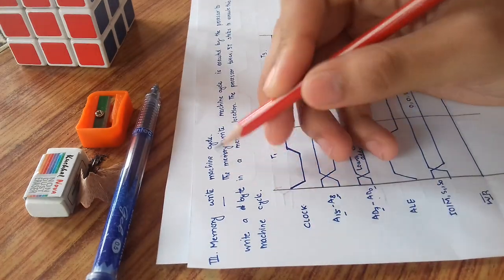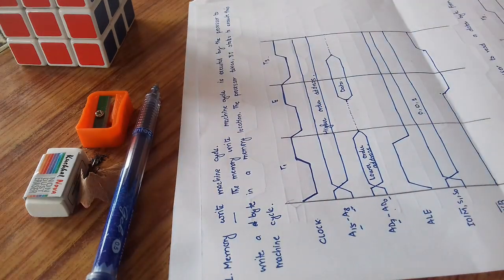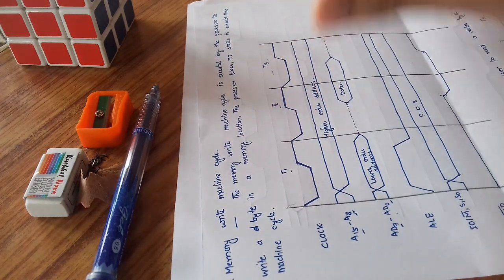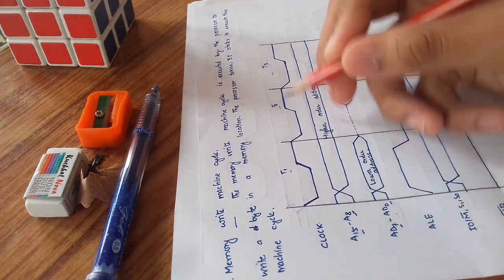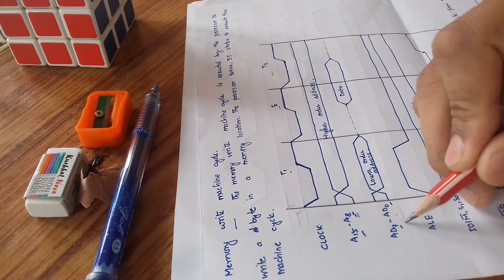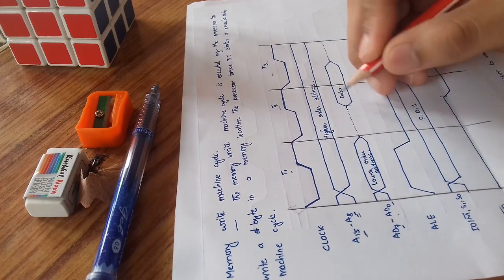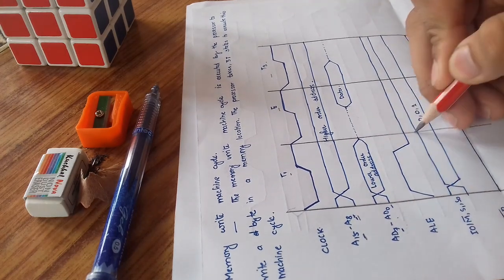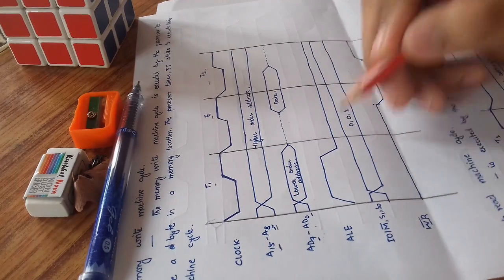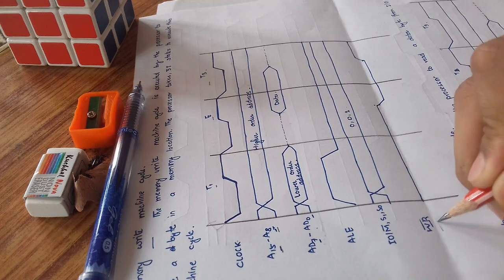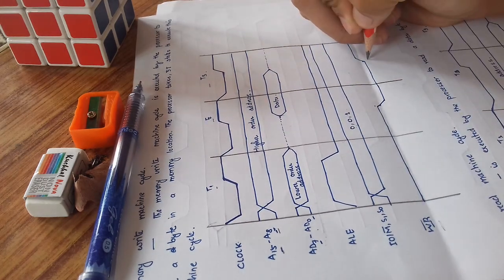The third cycle is the memory write cycle. It is executed by the processor when we have to write a byte into a memory location. It takes three clock states. AD15 to AD8 holds the higher order address, AD7 to AD0 holds the lower order address, and the data is stored in the data section. ALE gets initiated initially, and for the control signals we write 0, 0, 1. The write command gets activated in the data section.